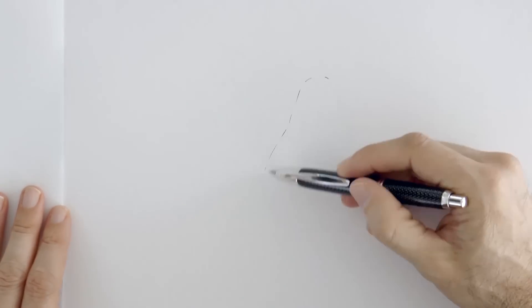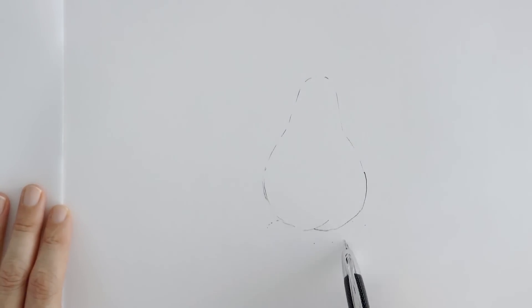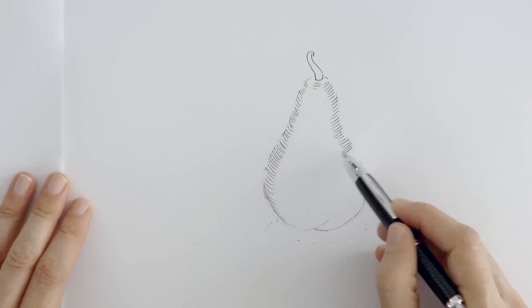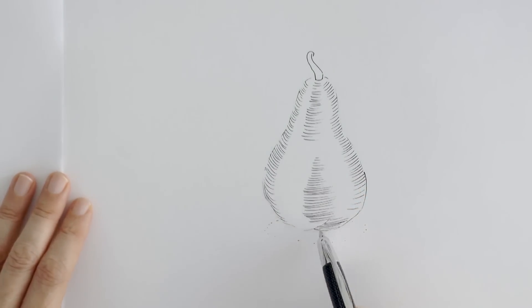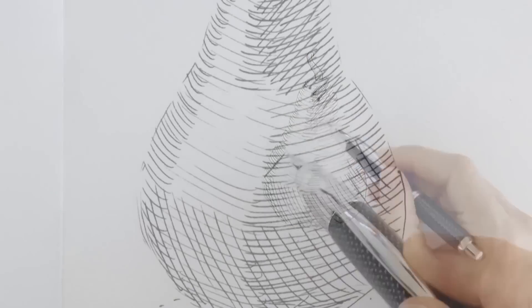The next technique is also with hatching and cross hatching, but this time we will try to follow the shapes of the pear. We make the lines trying to follow its form, trying to follow the contour in some way. You can do this with different directions.